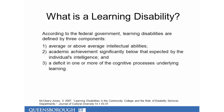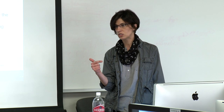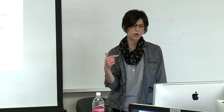Under Section 504 of the Rehabilitation Act and the Americans with Disabilities Act, students with learning disabilities are a protected category. The federal government's definition rests on three components: average or above-average intellectual abilities; academic achievements significantly below what is expected given those abilities; and a deficit in one or more cognitive processes underlying learning. What the federal government stresses is that learning disabilities are defined by a gap between expected and actual achievement.